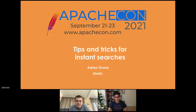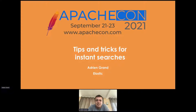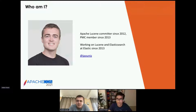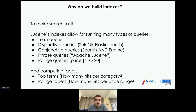Thank you. I'm going to try hard not to use the entire time for this presentation so that we can have interesting conversations at the end. I'll skip the intro slide since it was already covered. So first, why do we build indexes, and in particular Lucene indexes? Obviously we build indexes because we want to make search fast, but search is still slower than instant in many cases.